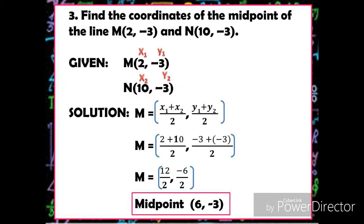Let's have another example. Find the coordinates of the midpoint of line segment MN, where point M is positive 2, negative 3, and point N is positive 10, negative 3. The given are: 2 is X₁, negative 3 is Y₁, 10 is X₂, and negative 3 is Y₂.